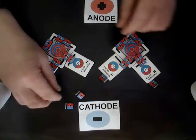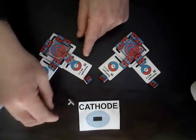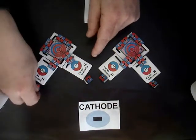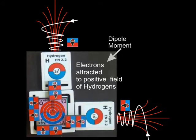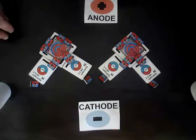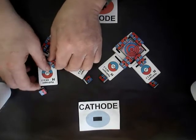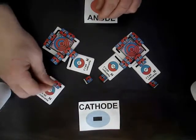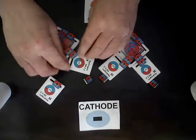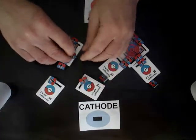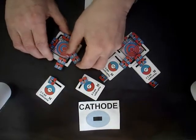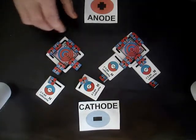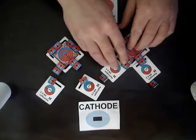Four electrons in the cell are emitted by the cathode and drawn to the electropositive side of the hydrogen. The hydrogen is protonized and picks up an electron. This is the overall reaction, and some intermediate mechanistic steps will be shown.